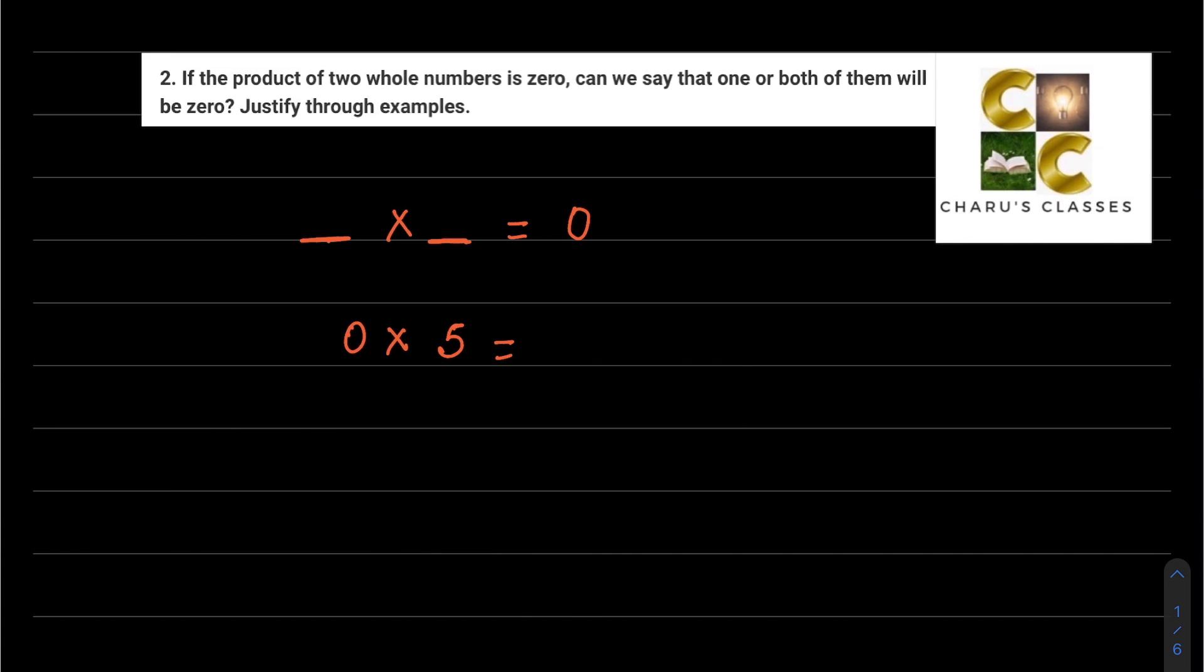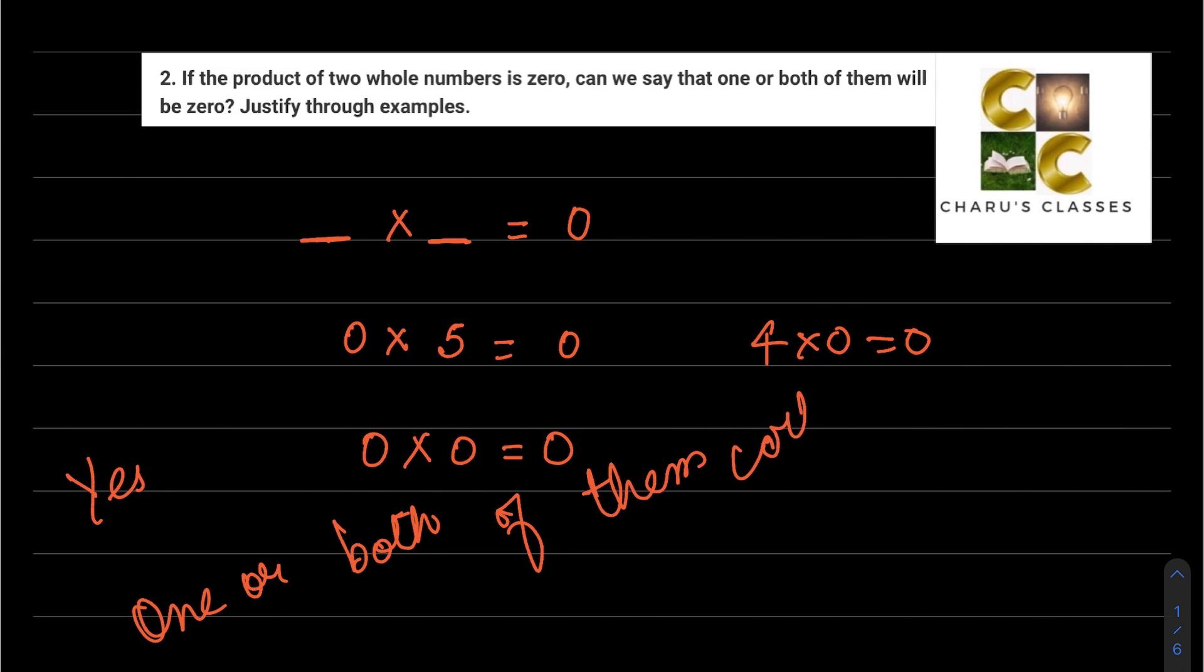0 multiplied by any number gives 0 as the answer. So 4 into 0 is 0, 0 into 5 is 0, and 0 into 0 is also 0. So yes, we can say that one or both of them will be 0.